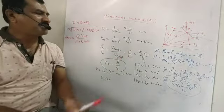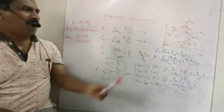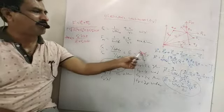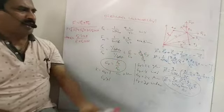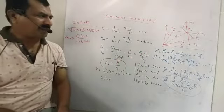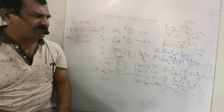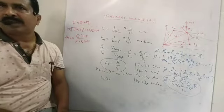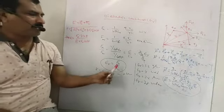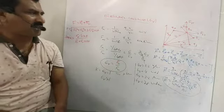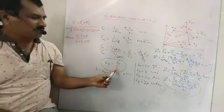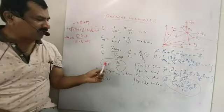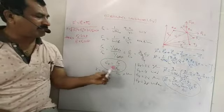Epsilon means the absolute permittivity of the medium. Absolute permittivity epsilon equals epsilon naught into epsilon r, divided by epsilon naught. Epsilon naught is the permittivity of free space, epsilon r is the relative permittivity of the medium. Epsilon r equals Fa divided by Fm — the ratio of electrostatic force between two charges in air to the force between the same charges at the same distance in a medium — and is called the dielectric constant of the medium.